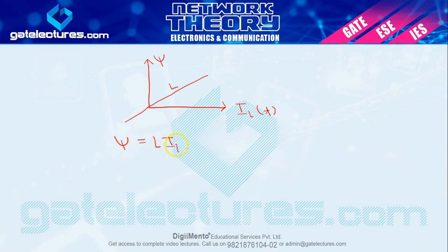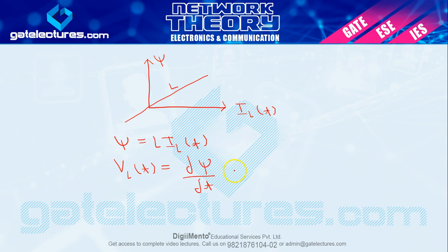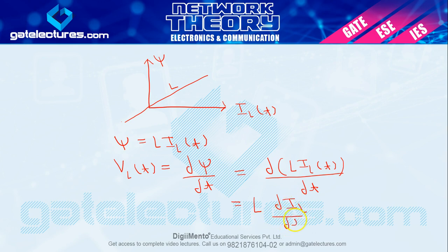Using the equation phi = LI and applying Faraday's law: V_L(t) = dΦ/dt. Substituting phi = L·i_L(t), and since L is constant, it comes outside the differentiation. Therefore, V_L(t) = L · d(i_L(t))/dt. This is the voltage across the inductor.